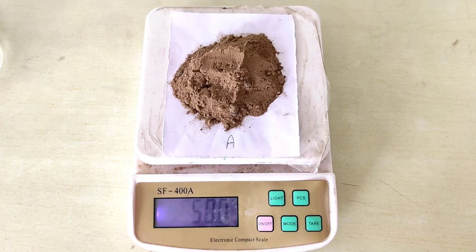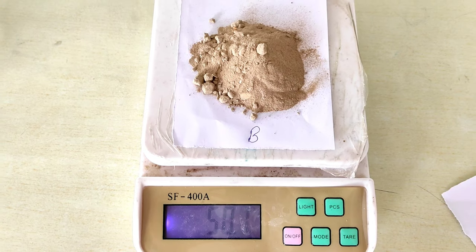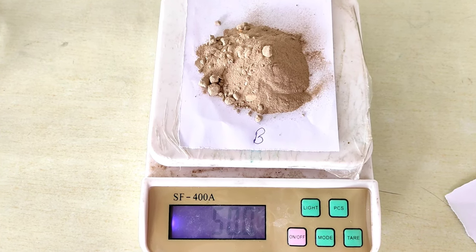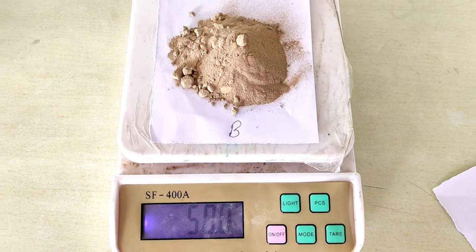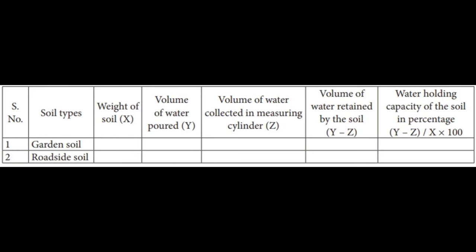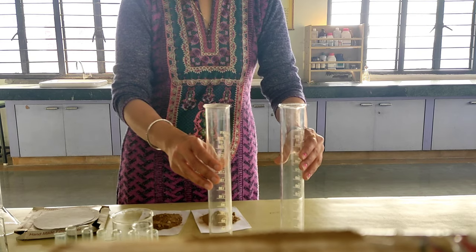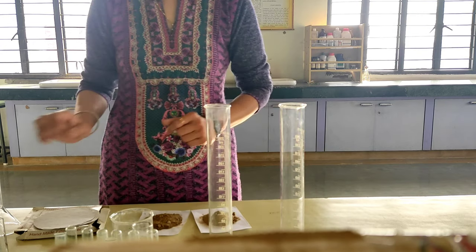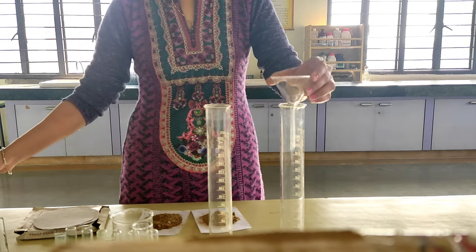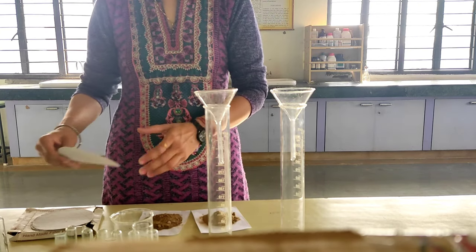Here we are taking soil sample A, which is our garden soil — 50 grams. Same way we are taking sample B, which is roadside soil — 50 grams. This is our x value, weight of soil: 50 grams. Now we have two measuring cylinders.